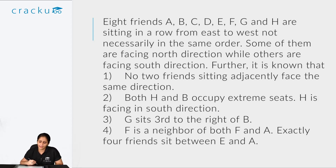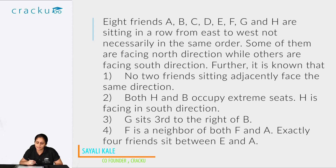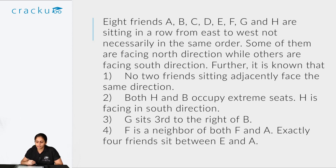The question is as follows: 8 friends A, B, C, D, E, F, G and H are sitting in a row from east to west, not necessarily in the same order. Some of them are facing north direction while others are facing south direction. The first condition is that no two friends sitting adjacently face the same direction.